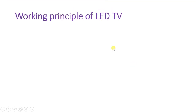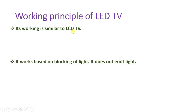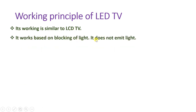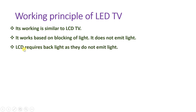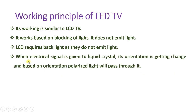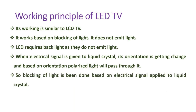The working principle of LED TV is the same as LCD television. It works based on the blocking of light — the LCD panel does not emit light itself. As a backlight, LED is used. Based on the orientation of the liquid crystal molecules, light appears on the display. An electrical signal is applied to the liquid crystal via electrodes, changing the orientation of the molecules so that polarized light passes through, producing different colors.